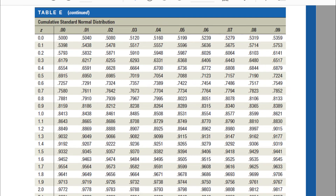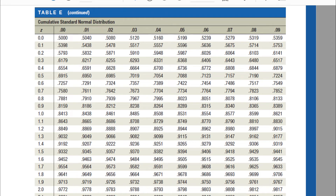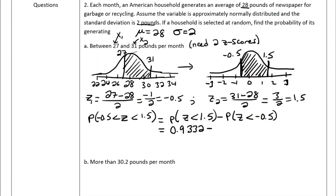From the table, the area for z equals 1.50 is 0.9332, and the area for z equals negative 0.50 is 0.3085. Subtracting gives 0.9332 minus 0.3085 equals 0.6247. So the probability is 0.6247.